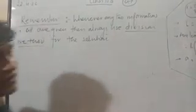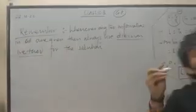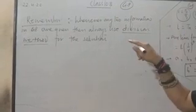Now check it out. In AP also I told you, whenever any two informations in AP are given, then we were using simultaneous method to get the value of A and D. Here in GP...